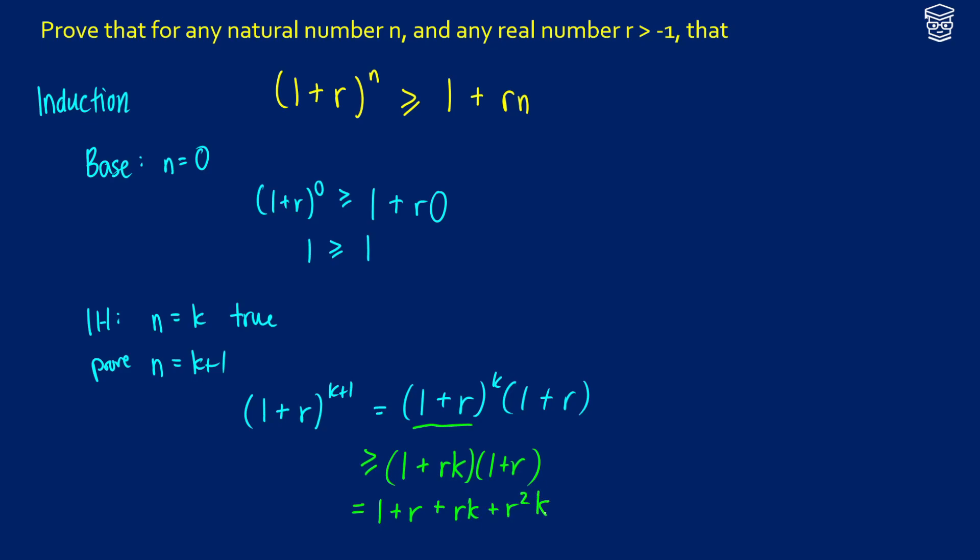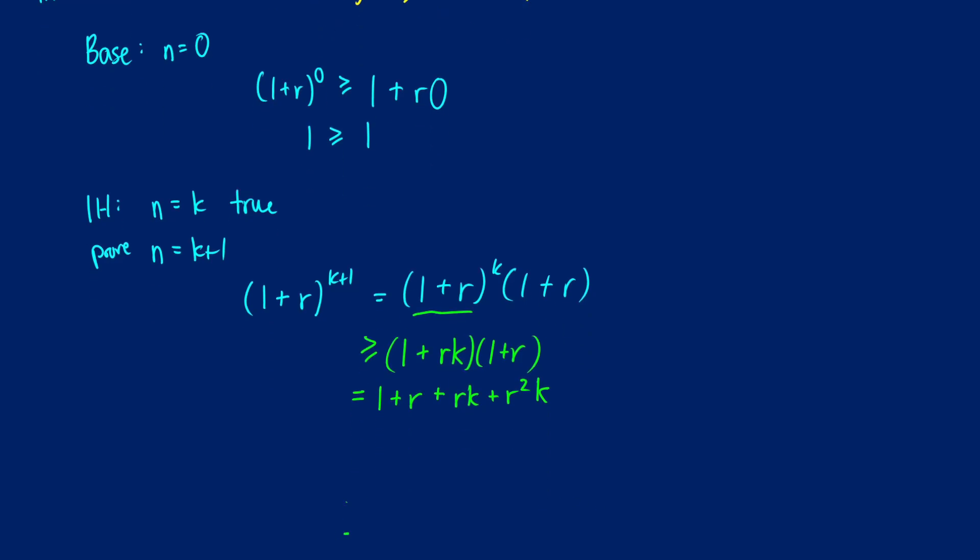At this point we might be a little confused as to what we want to do because our end goal is something like 1 plus r times k plus 1. This is what we want in the end. So how can we get there?